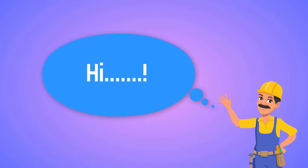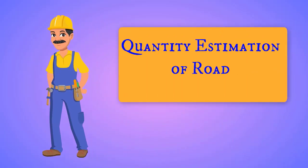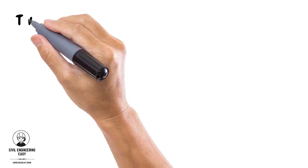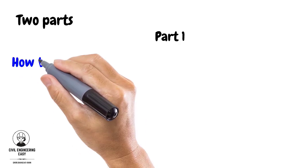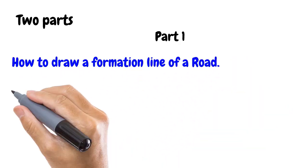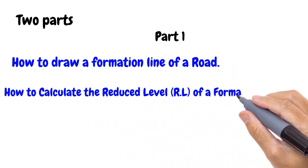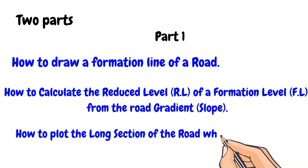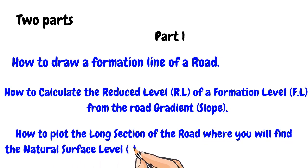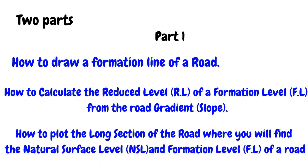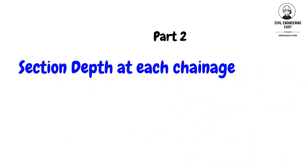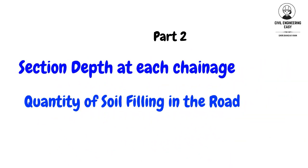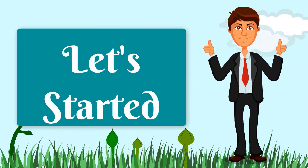Hi, welcome back to another interesting video related to the quantity estimation of a road. For simplicity, the video is divided into two parts. In this part, I will show you how to draw a formation line of the road, how to calculate the reduced level of the formation line when the road gradient is given, and how to plot the long section of the road where you will find the natural surface level and formation line. In Part 2, I will show you how to find the section depth and quantity of soil filling in the road. Let's get started with Part 1.